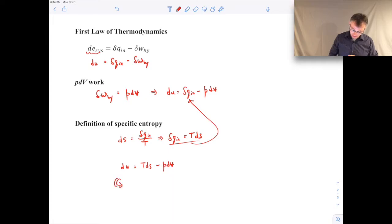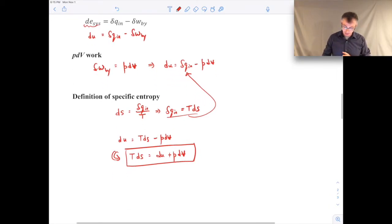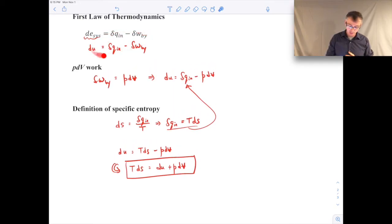And then I'll rearrange that to give us our first Tds equation. So that's our first Tds equation. It just relates the properties of temperature, specific entropy, specific internal energy, pressure, and specific volume all together. Where it comes from is just the first law of thermodynamics. Since we're dealing with a simple compressible system, the work would be PDV type work that's reversible if done quasi-statically.